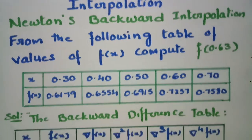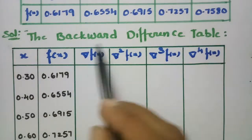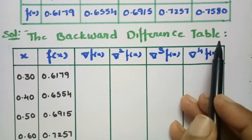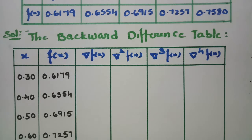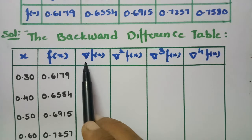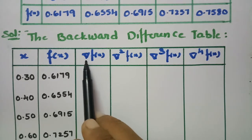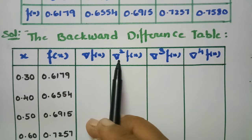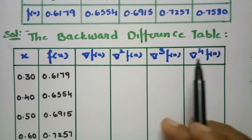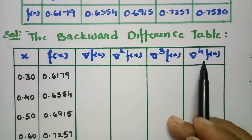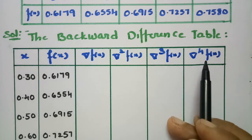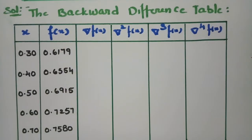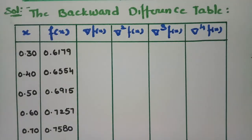For this, we have to make a backward difference table. Usually I used to draw a forward difference table, but here I am using a backward difference table, represented by del (∇). This is the first difference, del² is the second difference, del³ is the third difference, and del⁴ is the fourth difference. This is also the same structure as the forward difference table.